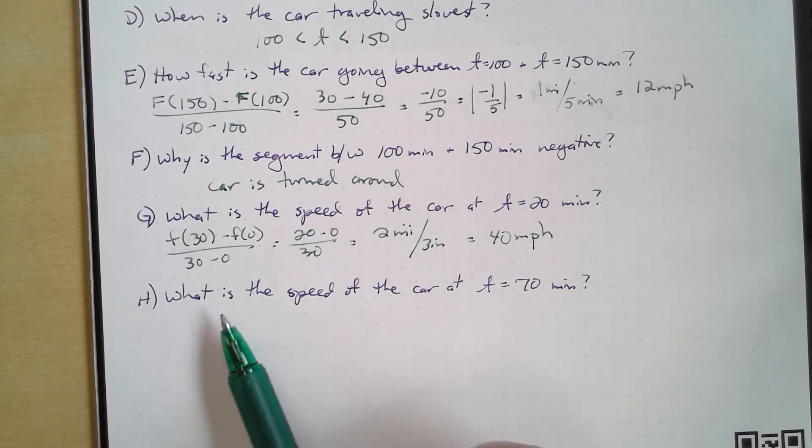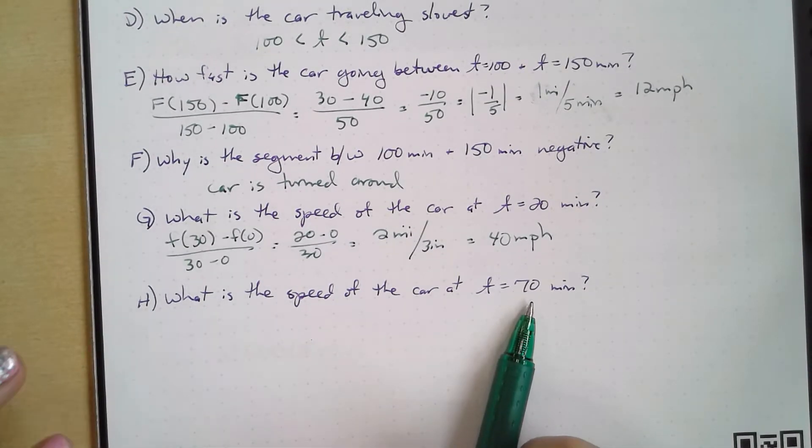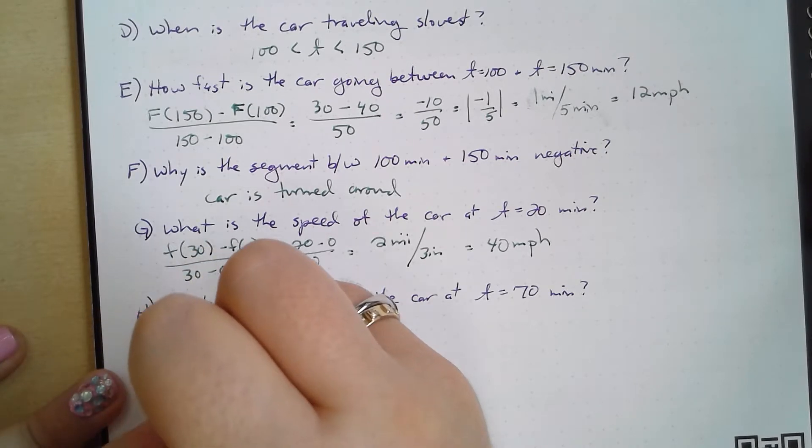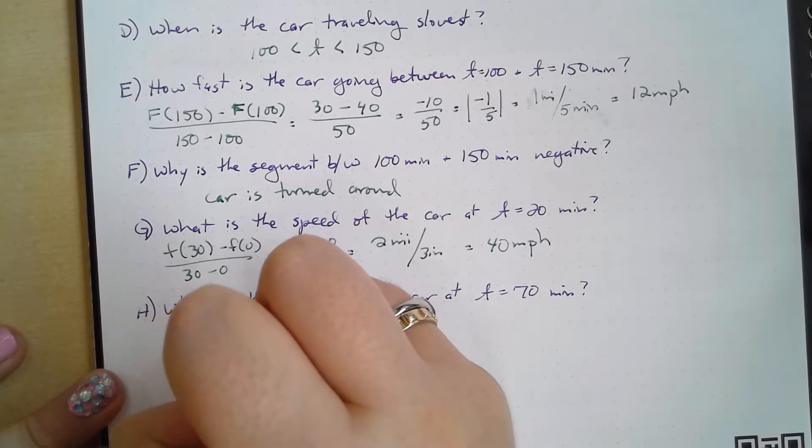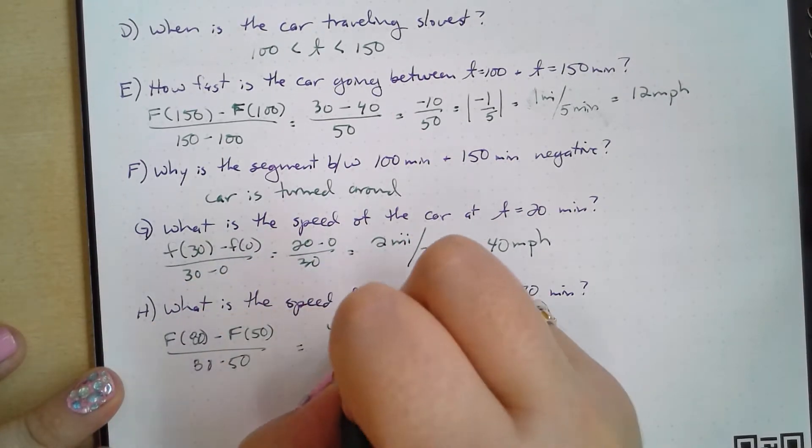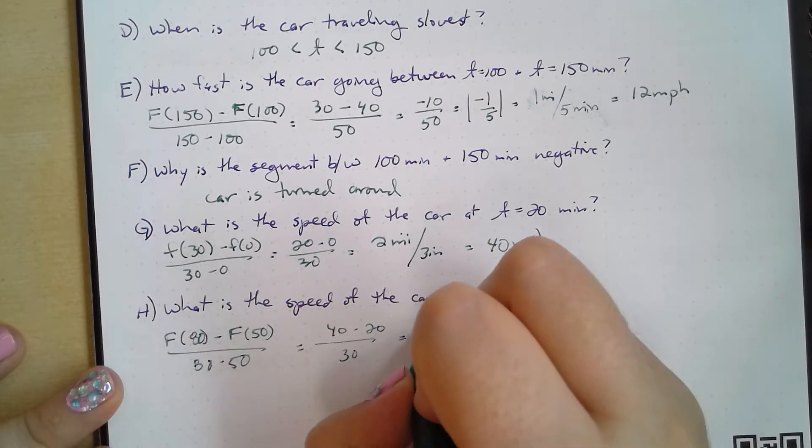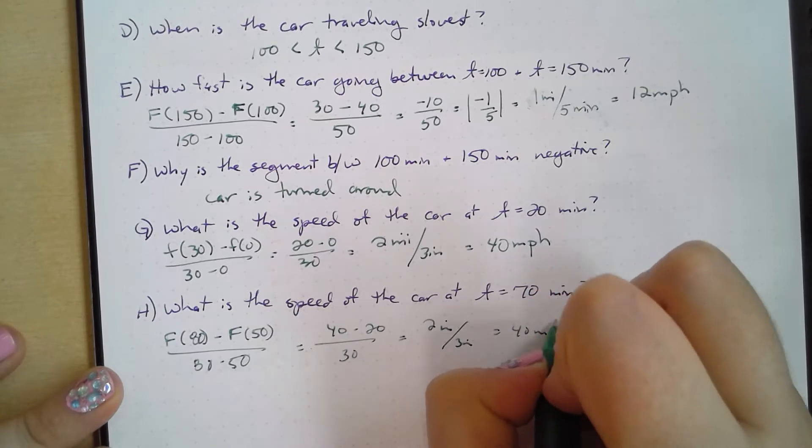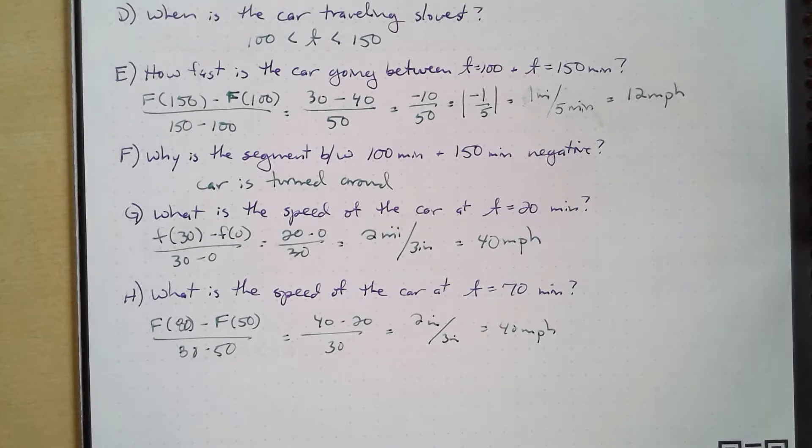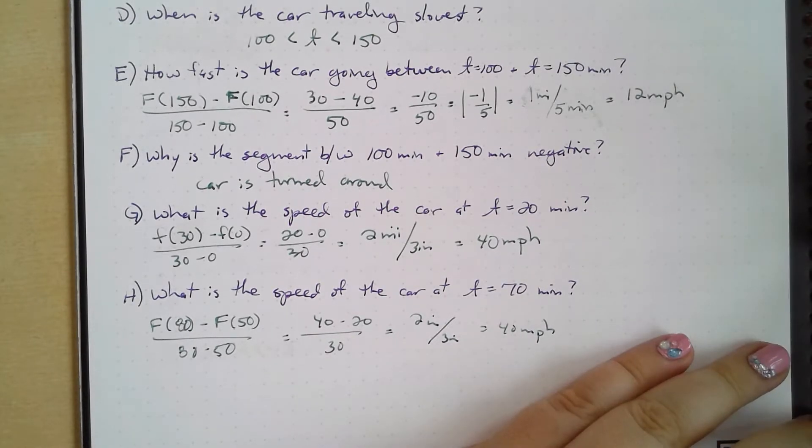And actually, if I did this again at 70 minutes, which is between 80 and 50, so I can take f(80) minus f(50) over 80 minus 50: 40 minus 20 over 30, 2 miles per 3 minutes, which again is 40 miles per hour. So we can see how rates of change allow us to actually calculate speed and time and can be applied to a lot of different situations.